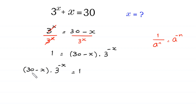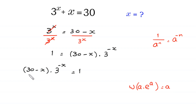We want to use here the Lambert W function, where W of a times e to the power a is equal to a. To use the Lambert W function, we must have the same expression in both places. As you can see in the Lambert W function, we have the same expression a here and here. But for now we have negative x here and 30 minus x here.